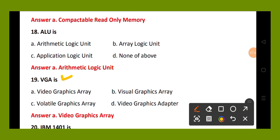Question number 19. VGA: option A, video graphics array; option B, visual graphics array; option C, volatile graphics array; option D, video graphics adapter. The right answer is option A, video graphics array.